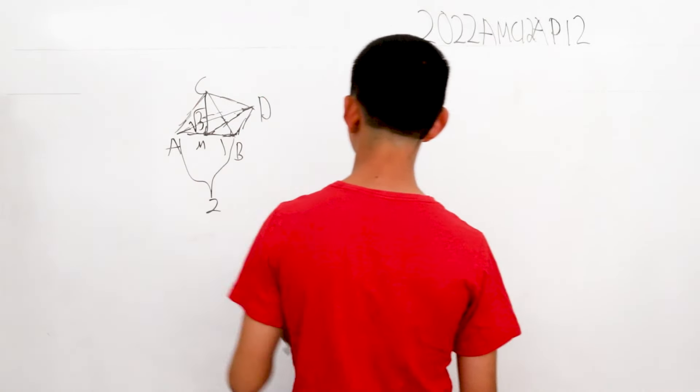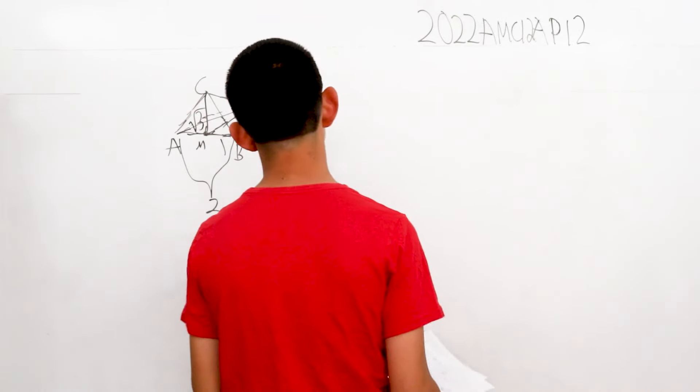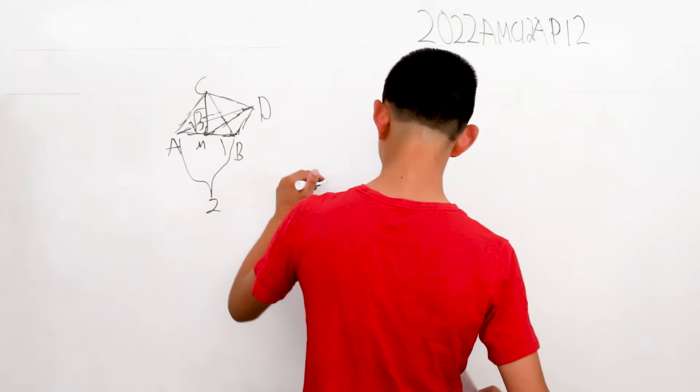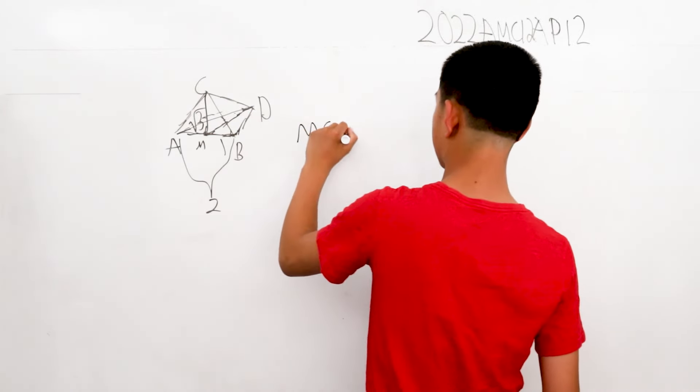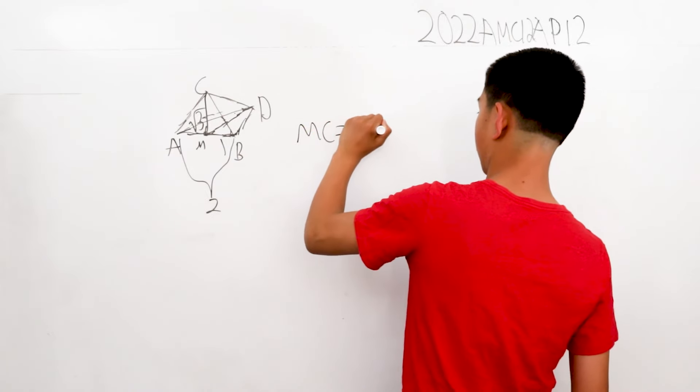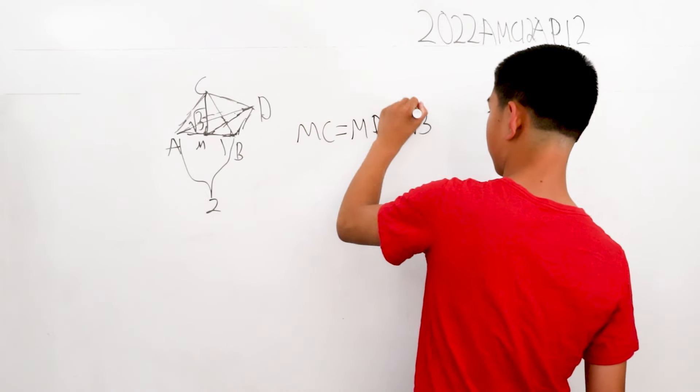And that's also equal to the length of MD. So, the length of MC is equal to the length of MD, which is the square root of three.